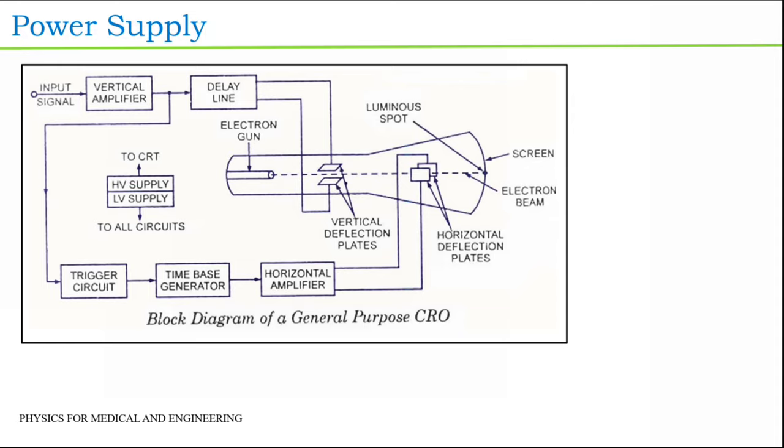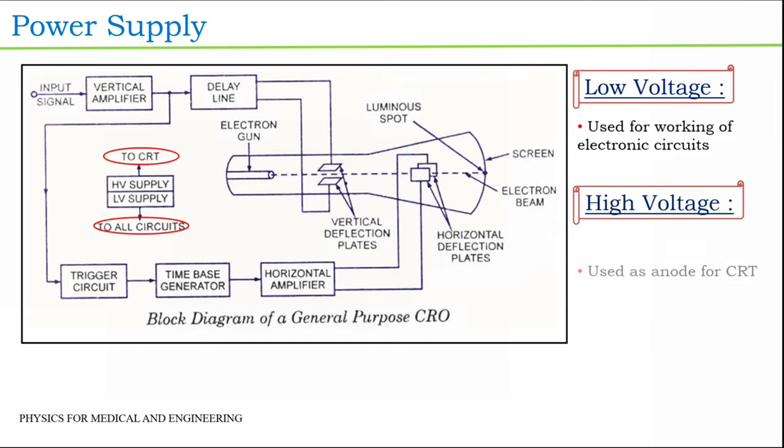Every instrument needs a power supply for it to work. The power supply section of a CRO generates two levels of DC voltage. A low voltage is used for the working of electronic circuit and a high voltage level is used as the anode for CRT. The high voltage generated is of the order of 1000 to 1500 volts.